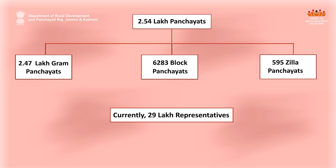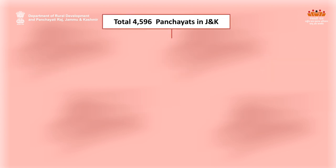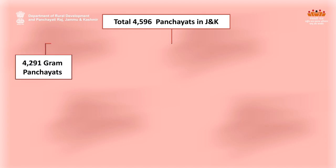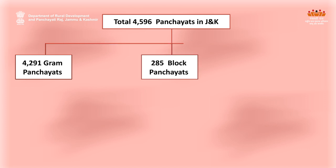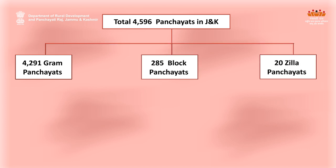At the same time, there are 4,596 Panchayats in Jammu and Kashmir, out of which 4,291 are Gram Panchayats, 285 are Block Panchayats, and 20 are District Panchayats.